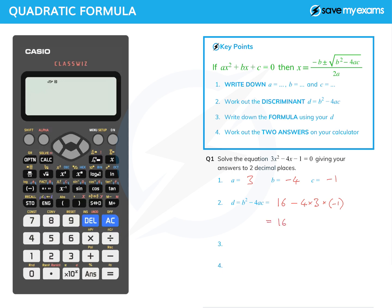So if I've got my 16 there, and if I look at this I've got minus 4 times 3, which is minus 12, times minus 1. And multiplying by minus 1 changes the sign, so I've got 16 plus 12, which is 28.